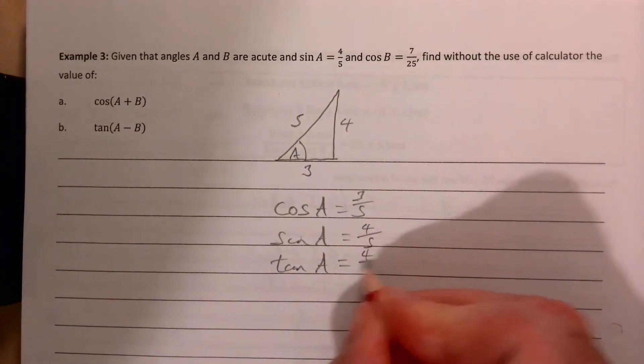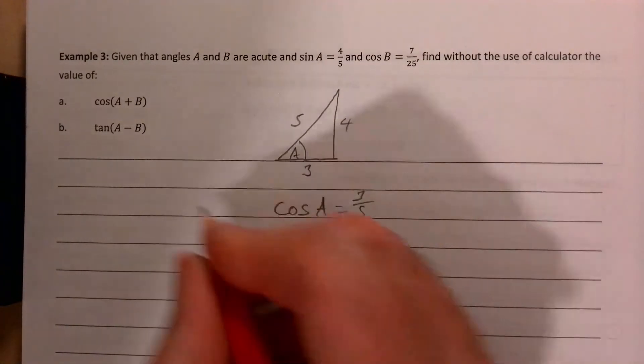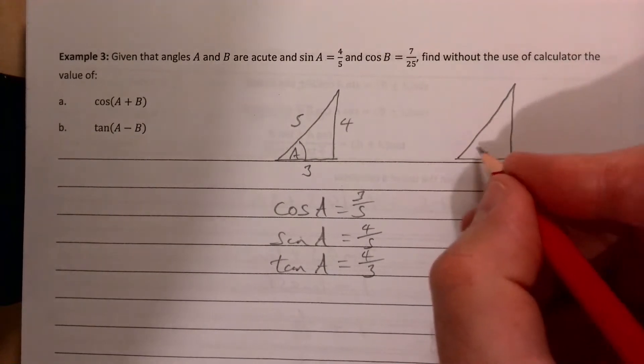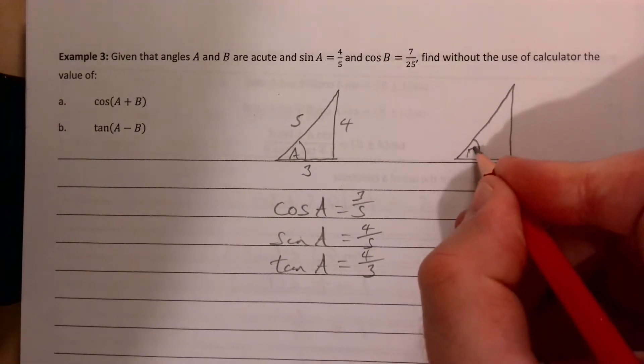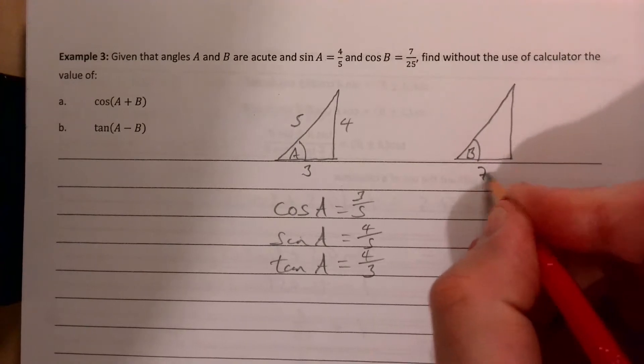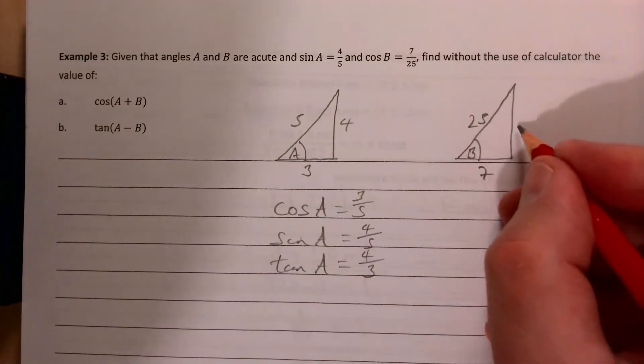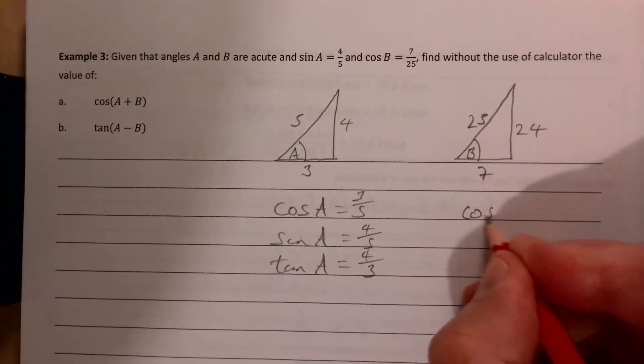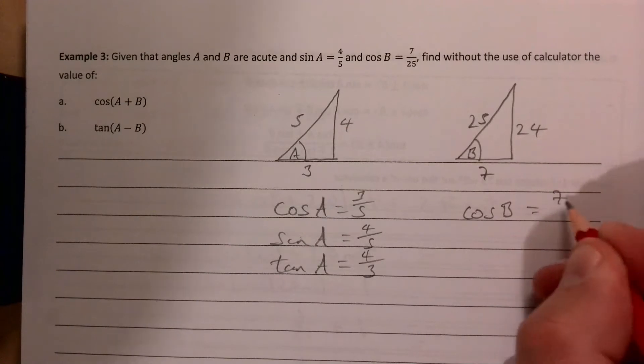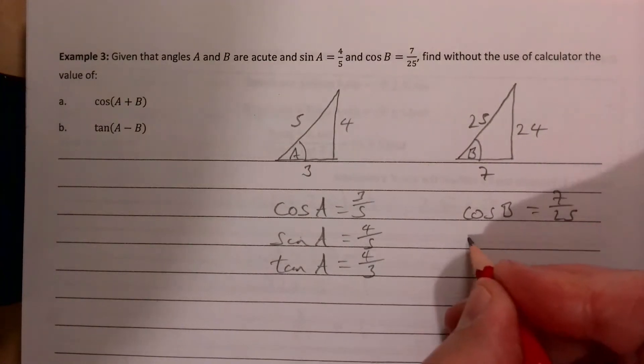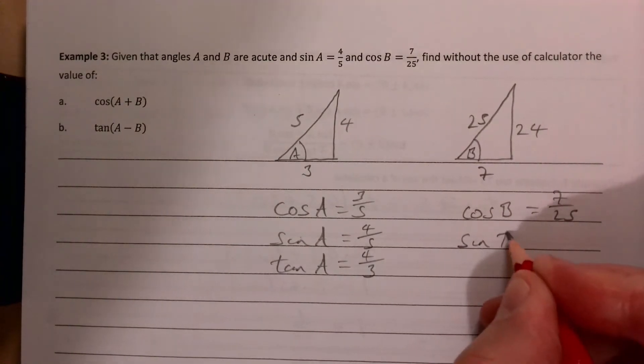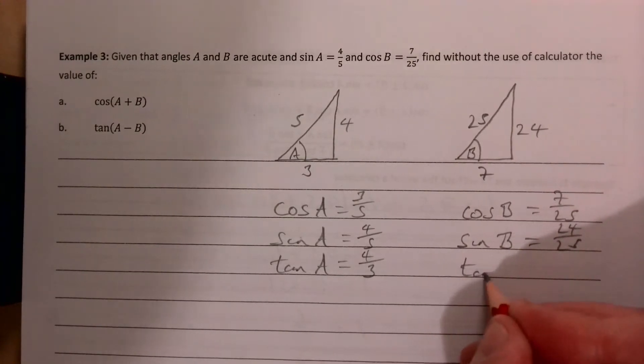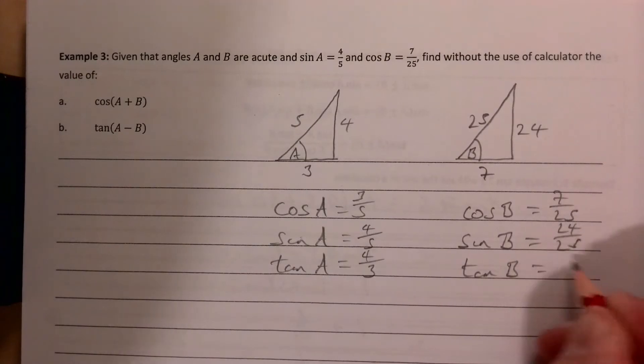That's going to be helpful working these out in parts a and b. For the other one it's similar. This is angle B, and cos B means that's 7 and that's 25. That's another Pythagorean triple so it's going to be 24 there. That means cos B, which we were given, is 7/25, sin B is 24/25, and tan B is 24/7.